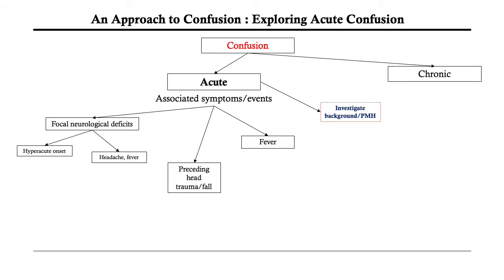In exploring acute confusion, it is important to ascertain a few things. Are there any focal neurological signs? Is there recent trauma or a recent fall? Are you suspecting sepsis? Is there fever or systemic signs in general? And lastly, exploring your patient's background, past medical history, and drug history will be imperative to your investigation. The reasoning behind all these questions will be explored in the next slide.